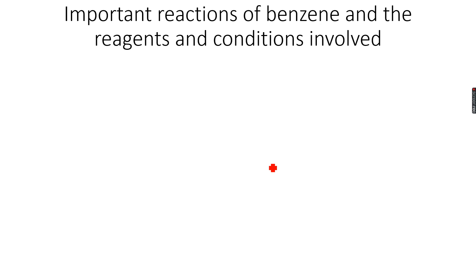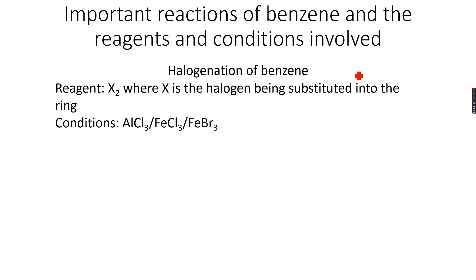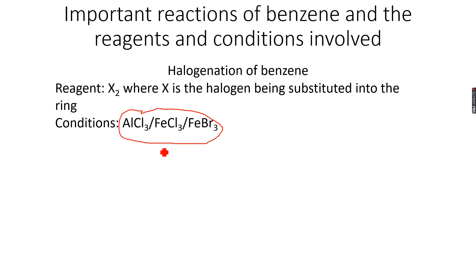So, important reactions of benzene and the reagents and conditions involved. I've given you all the reaction conditions and reagents, so you don't need to refer to any book — just learn it from here and you'll be ready for your exam. First, halogenation of benzene, which we just covered. The reagent is X2, where X is the halogen — in our case Br2 because we were adding bromine. We also have to use a catalyst, because benzene is a very unreactive molecule.